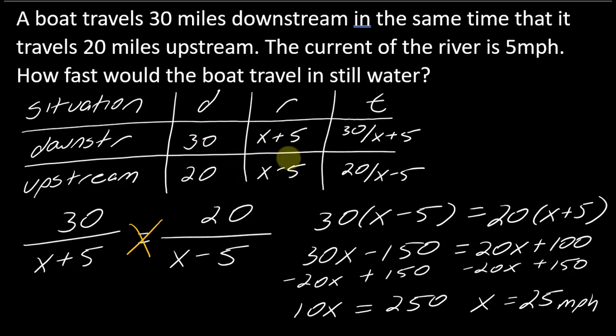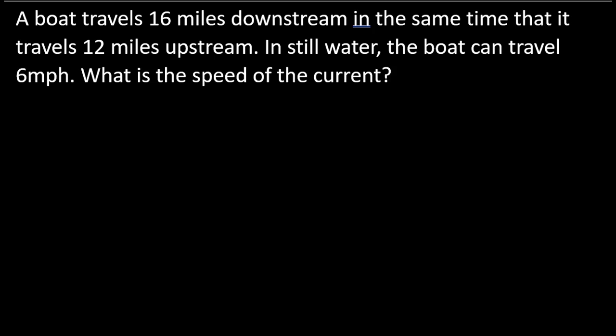I've laid this out for you, but this next problem is slightly different. I'd like you to try it completely on your own — if you just watch me do it perfectly, you won't get as much out of it. So pause the video, try to figure out why this problem is a little different, and push yourself through it. Hit play when you're ready. Okay — so I've got another downstream/upstream situation: 16 miles downstream, 12 miles upstream, in the same amount of time. In still water, the boat can travel 6 miles per hour. What is the speed of the current?